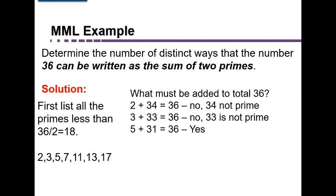The next prime on our list that we need to check is 7. You would have to add 7 to 29 to get 36. Try divide 29 by anything, and you're going to find that only 1 and 29 go in evenly. So that's also a way of writing it as a sum of 2 primes. Next, we have to check 11. 11 plus 25 would give us 36, but 25 is not prime. It's divisible by 5, so that's not going to work.